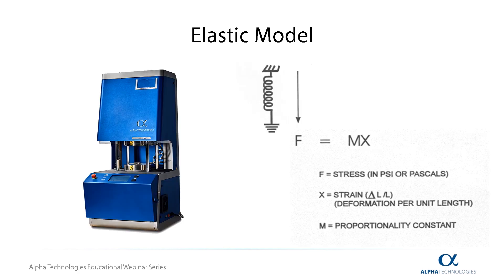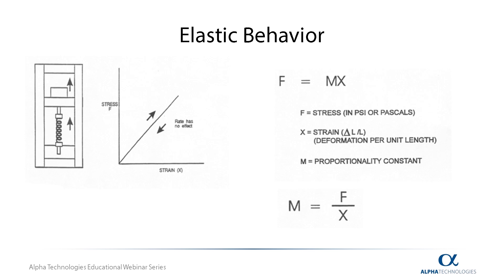To start things off, we're going to talk about elastic behavior. A perfectly elastic material is referred to as an elastic solid or an ideal solid. For a material to qualify as an elastic solid, it must fully comply with Hooke's Law — that is, the power of any spring is in the same proportion with the tension thereof. This means a spring is any material that can be formed by a force and then returned to its true original shape when the force is removed.